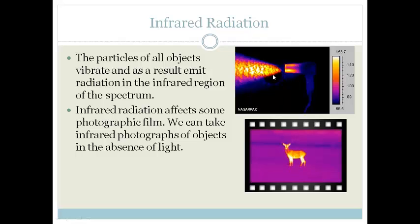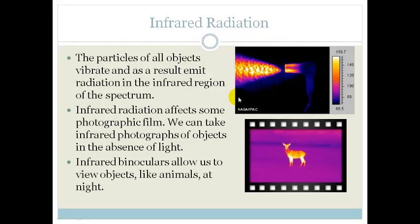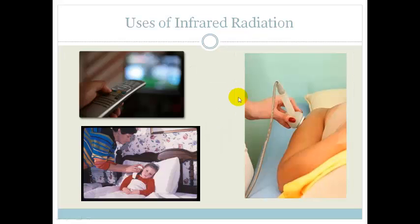Infrared radiation only shows up hot objects — for example, a hair dryer giving off lots of hot air. Infrared binoculars allow us to view objects like animals at night. Those night goggles you see in action movies are infrared binoculars or goggles. We also use infrared radiation in our remote controls to switch on our TV or change the channel — the little LED light at the front just shows us the signal has been sent, but the actual transfer of information uses infrared radiation.